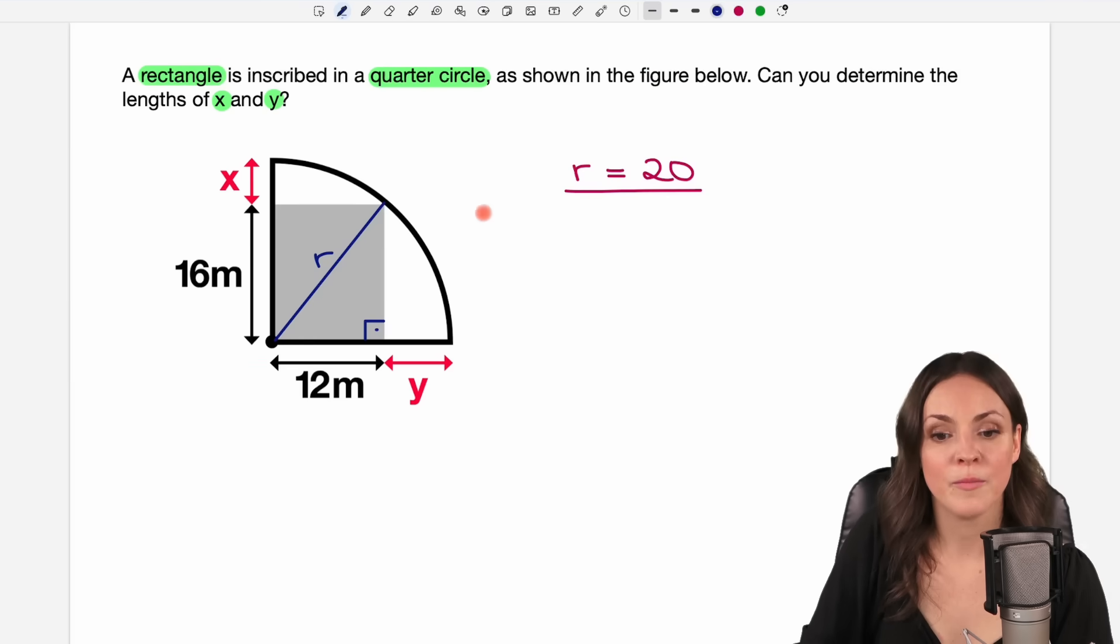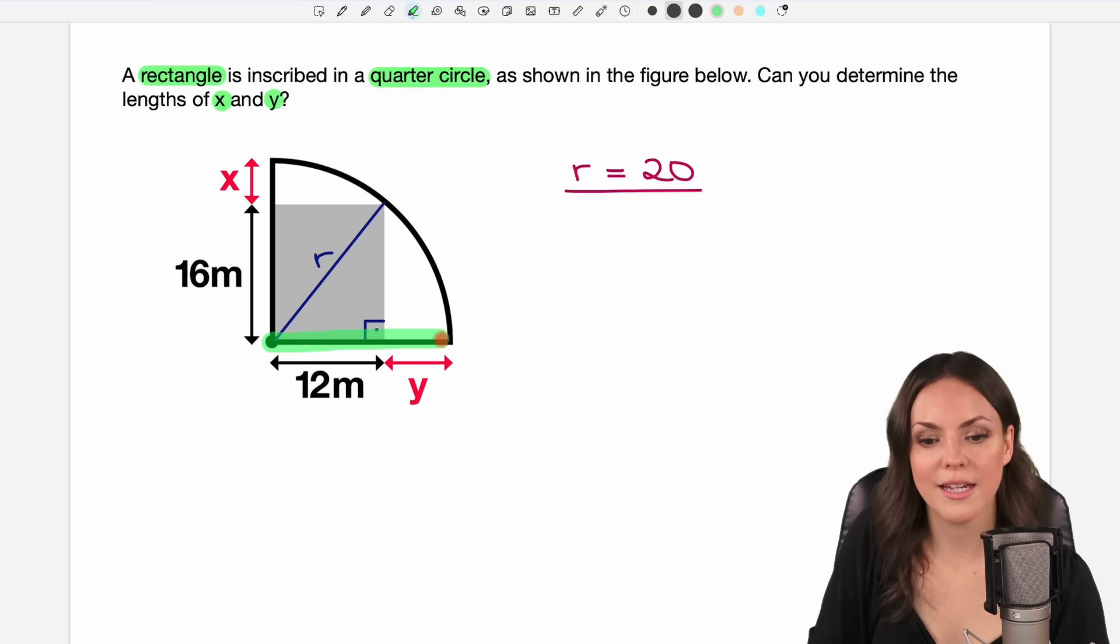And we go back to our problem. We wanted to find out the length of x and y. And we just found the radius. So we know from the center to the edge, this part here, so this part here, is of length 20.